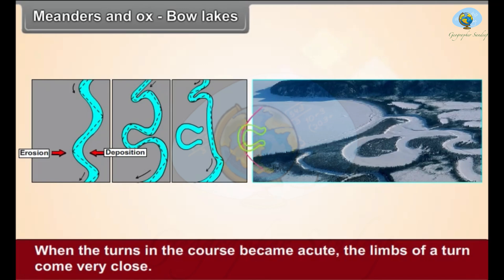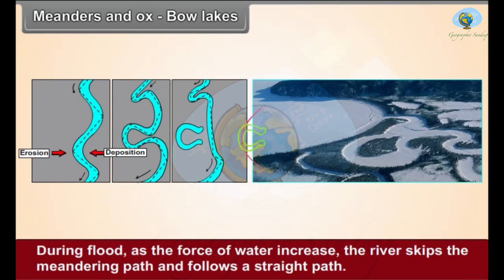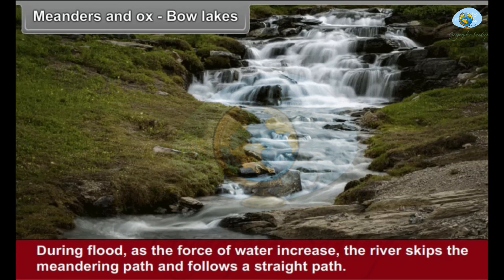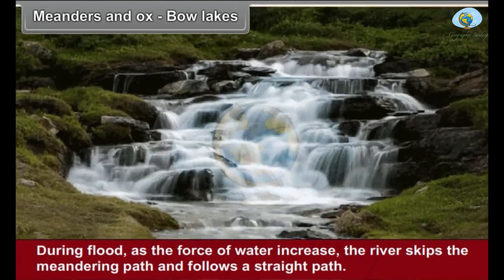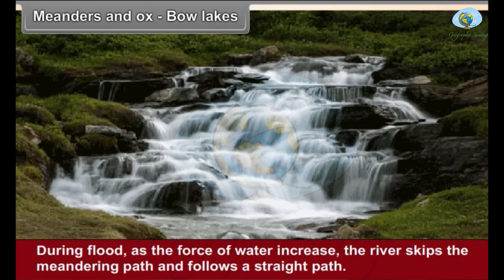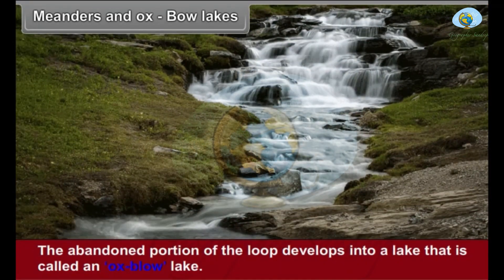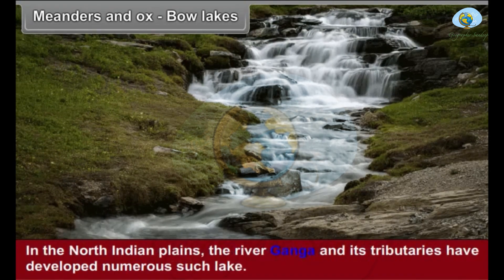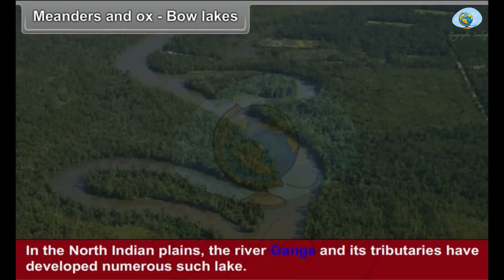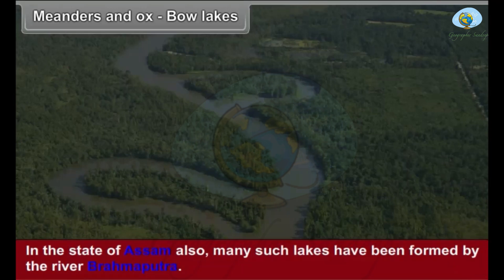When the turns in the course become acute, the limbs of a turn come very close. During floods, as the force of water increases, the river skips the meandering path and flows a straight path. The abandoned portion of the loop develops into a lake called an oxbow lake. In the North Indian plains, the river Ganga and its tributaries have developed numerous such lakes, and in Assam many such lakes have been formed by the river Brahmaputra.